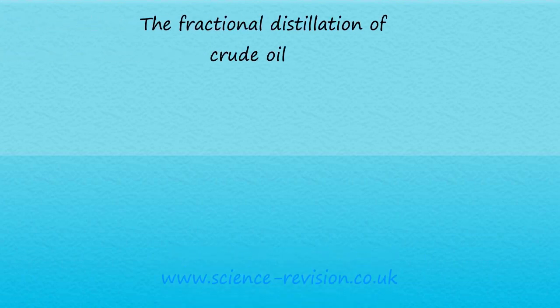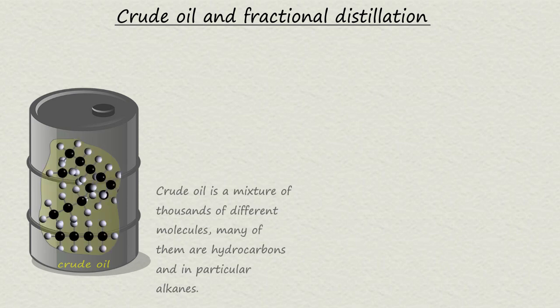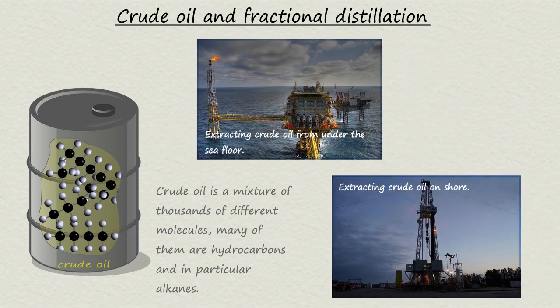Hi, in this video we will look at how the different hydrocarbons found in crude oil are obtained by fractional distillation. If you need any further help then please click the links in the description below. Crude oil is a thick black liquid which is a mixture of many dissolved solids, liquids and gases. Crude oil can be extracted from under the sea or on land. However, despite being a valuable natural resource, it is almost useless in its raw state simply because it is a mixture.